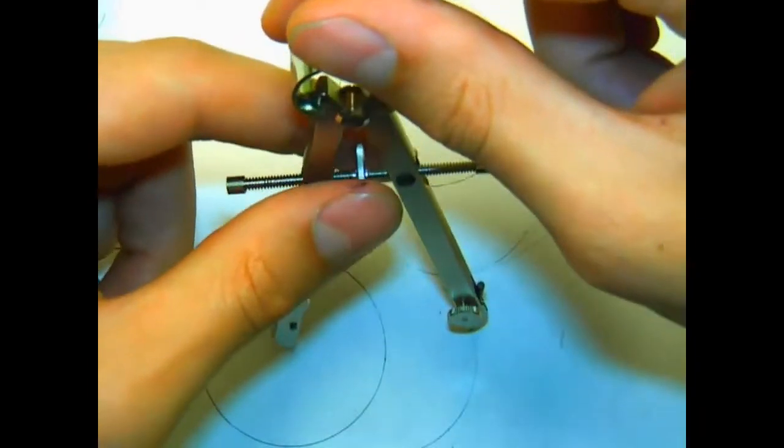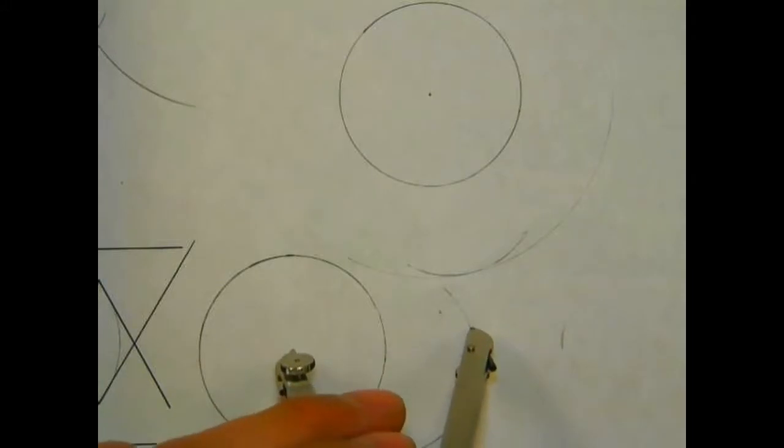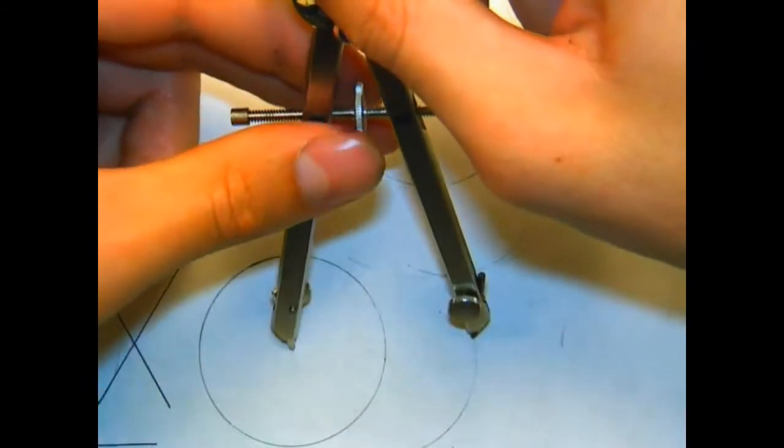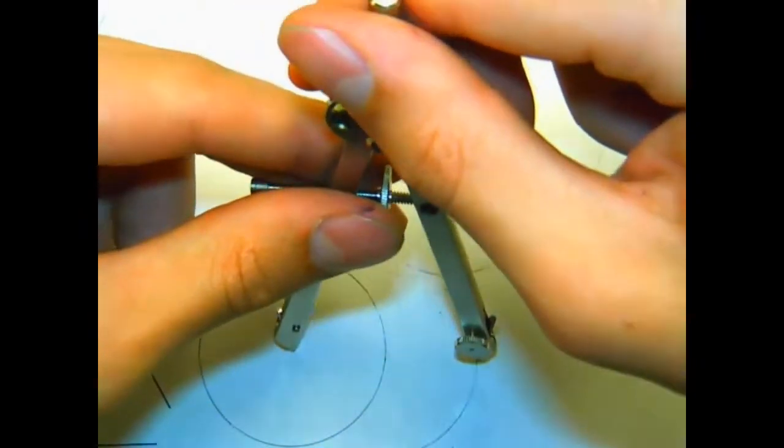Again to find the high point of those arcs, we start at the left side and extend our compass out until it goes beyond the arc. When we've reached that point, we know we're at the high point.